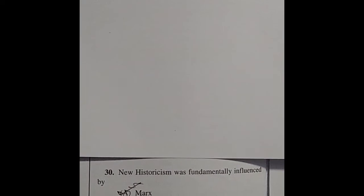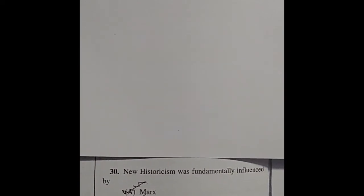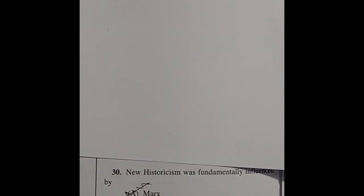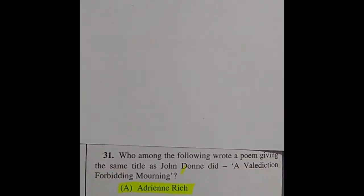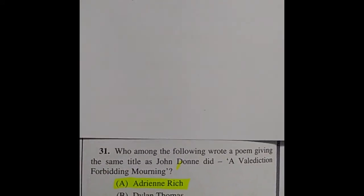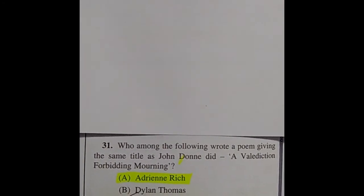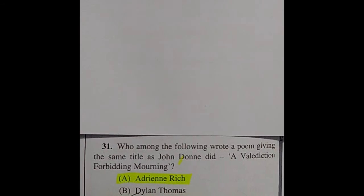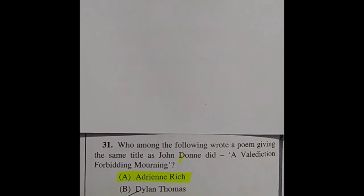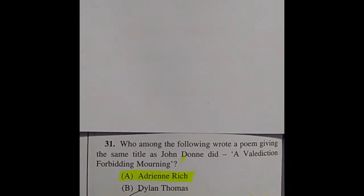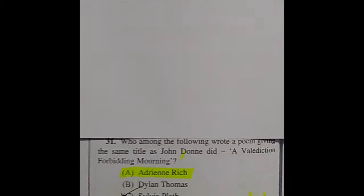Question 30: New Historicism was fundamentally influenced by — the right answer is option D. Question 31: Who among the following wrote a poem giving the same title as John Donne's 'A Valediction: Forbidding Mourning'? The right answer is option A: Adrienne Rich.